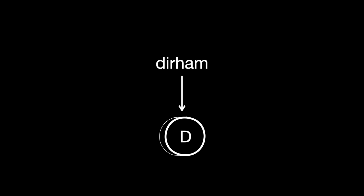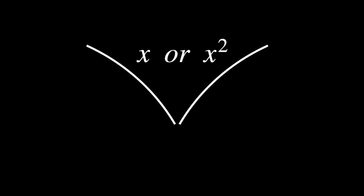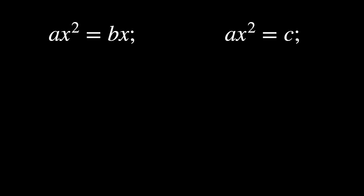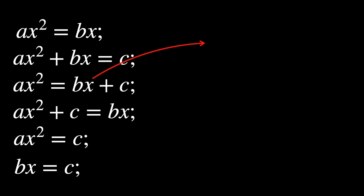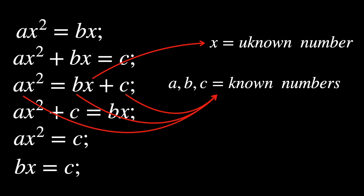Al-Khwarizmi proposed that all quadratic equations, where the highest power is either x or x squared, can be simplified into six basic forms. x always represents the unknown number, while a, b, and c always represent known quantities.